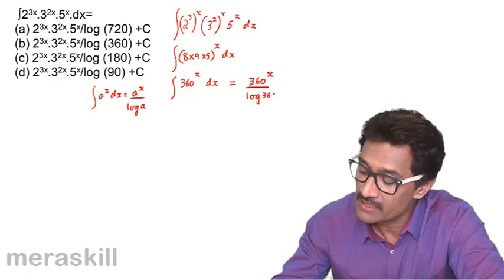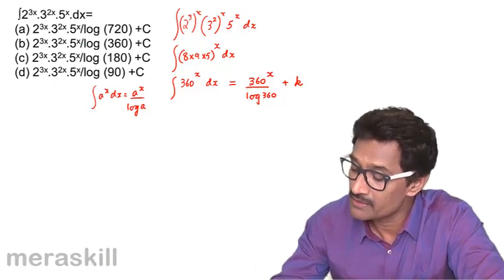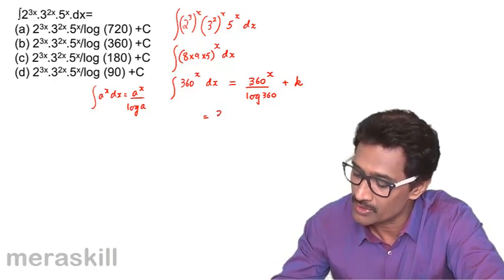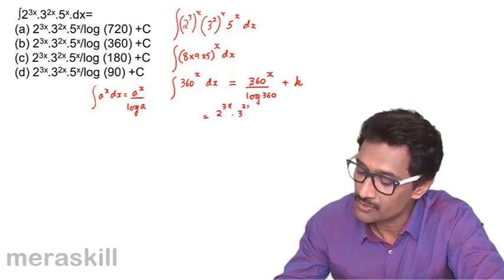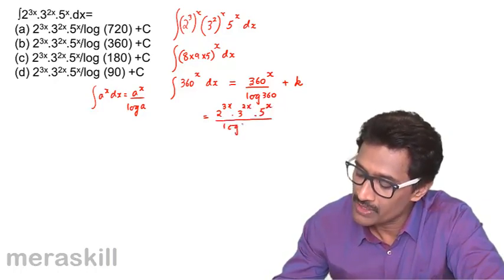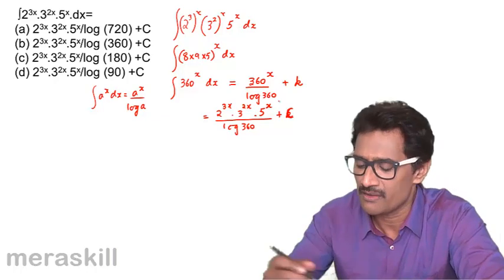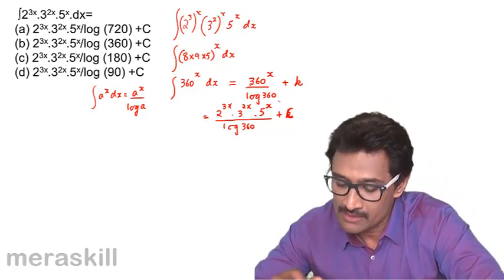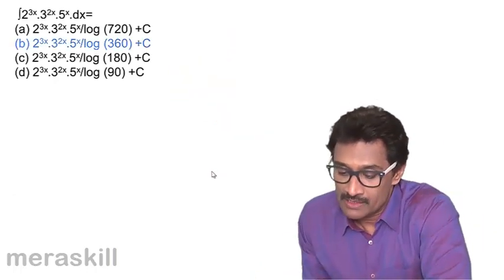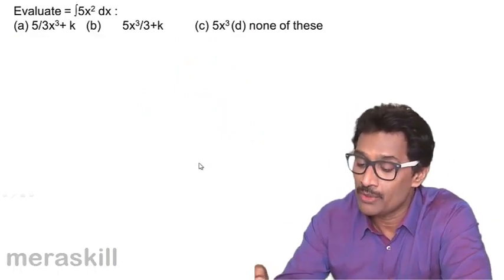Using the formula ∫a^x dx = a^x / log a, this gives 360^x / log 360 + k. Since 360^x is not given directly among the options, we rewrite it as 2^(3x) · 3^(2x) · 5^x upon log 360 plus the constant. Among the options, this matches option B.